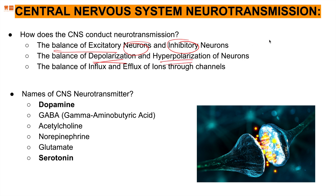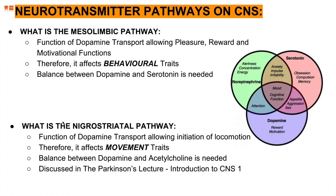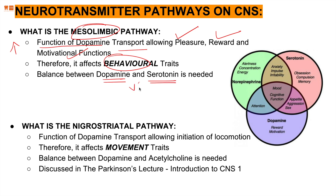Action potential is either given or inhibited through the influx and efflux of various ions in the presynaptic vesicle, deciding whether to send the signal out. In today's lecture the neurotransmitters in discussion are dopamine and serotonin. The mesolimbic pathway is our main topic, where dopamine transport provides pleasure, reward, and motivational functions. Too much dopamine can lead to psychosis, requiring dopamine-serotonin balancing.